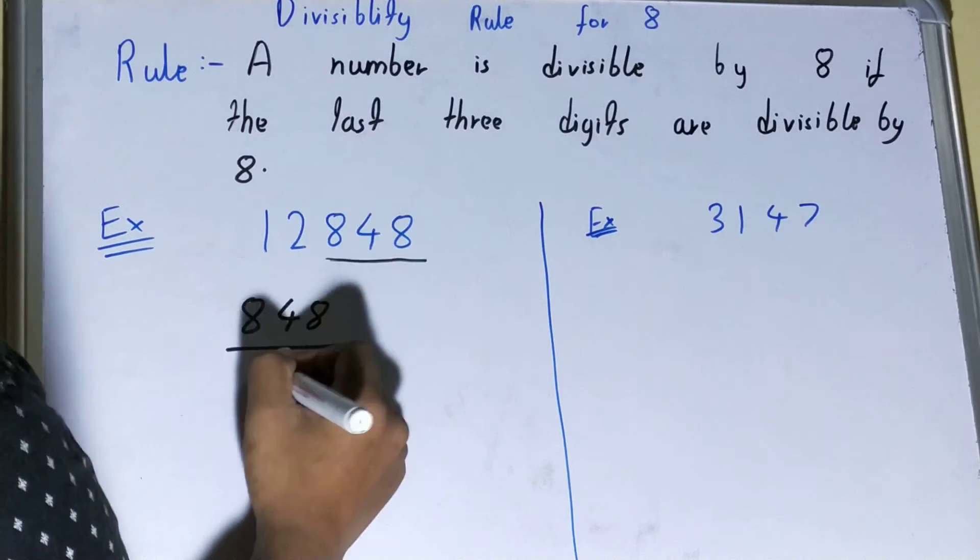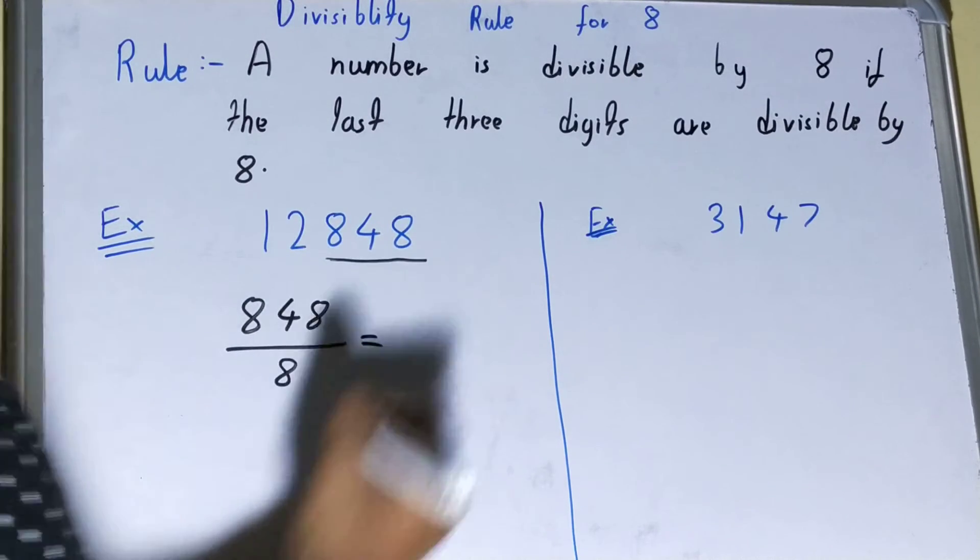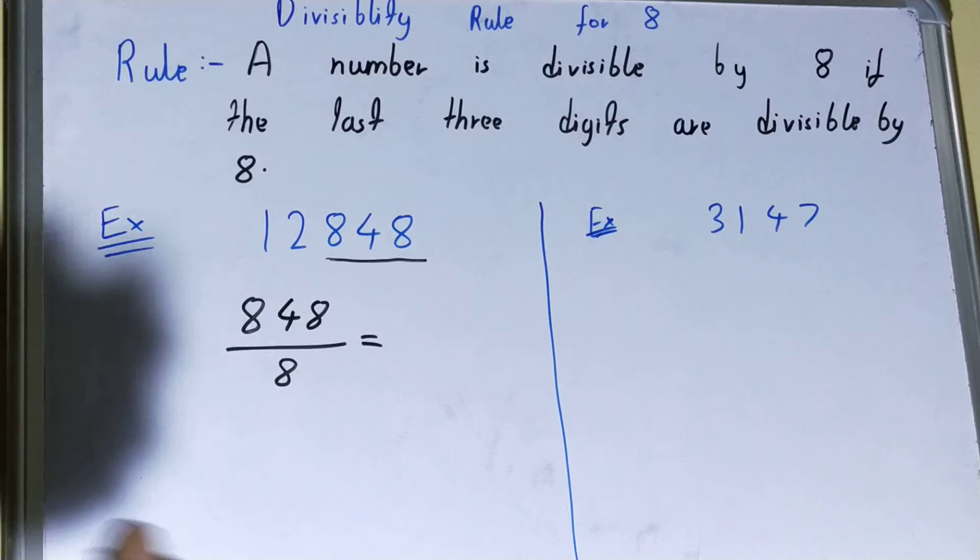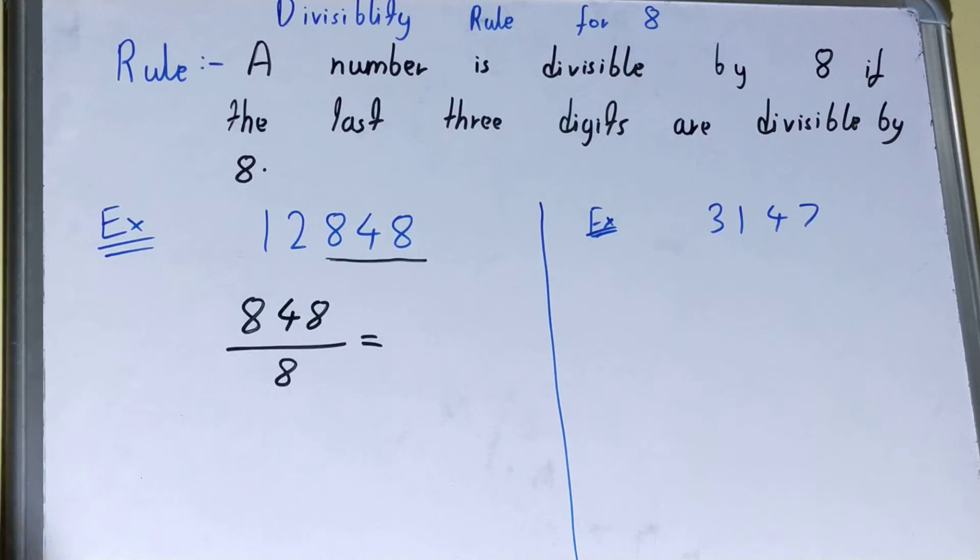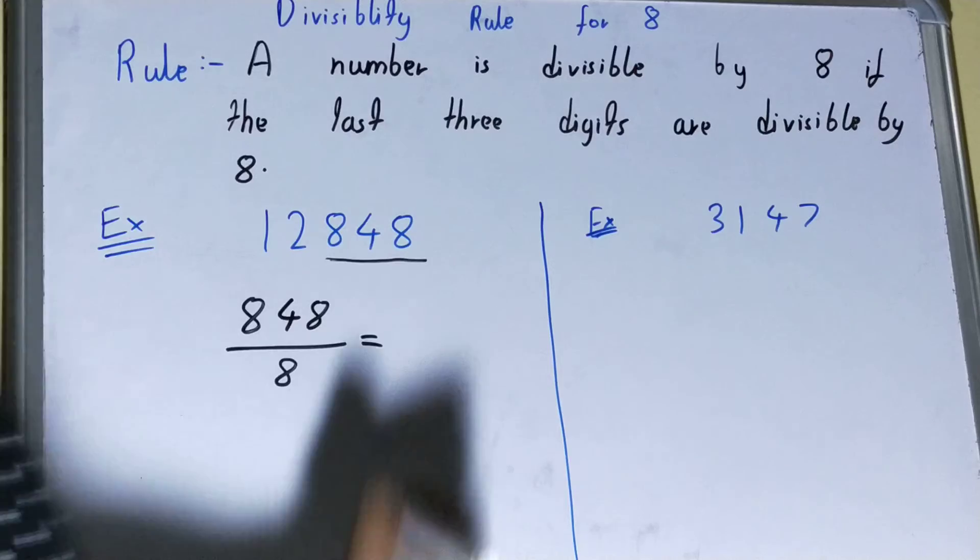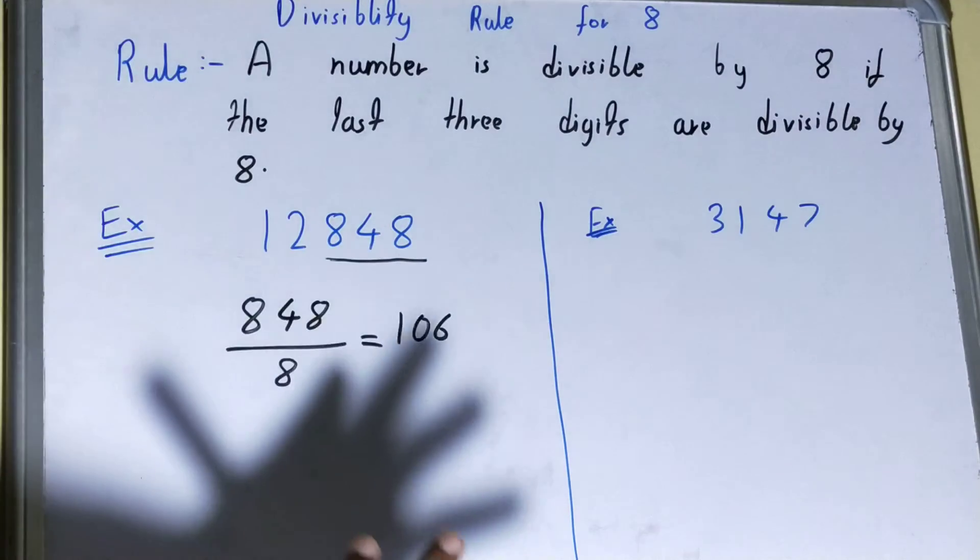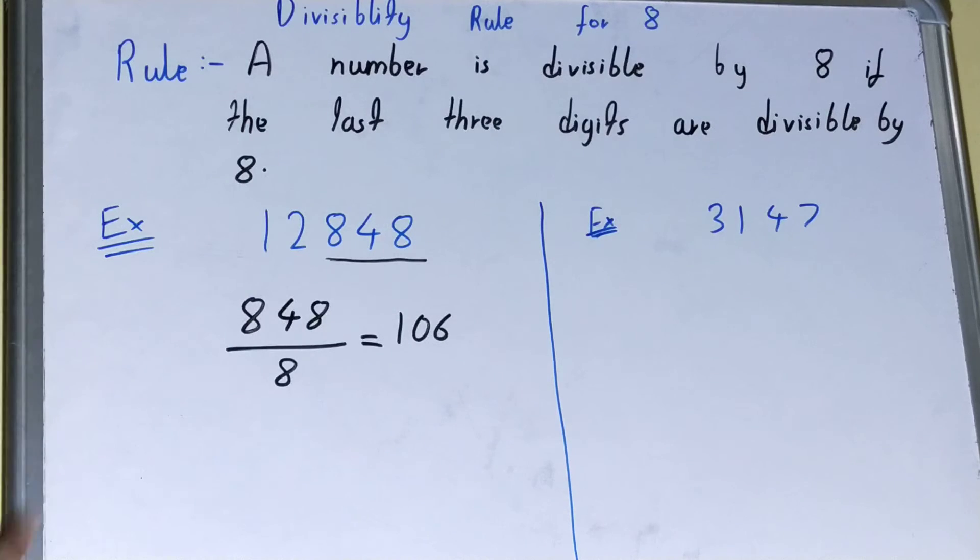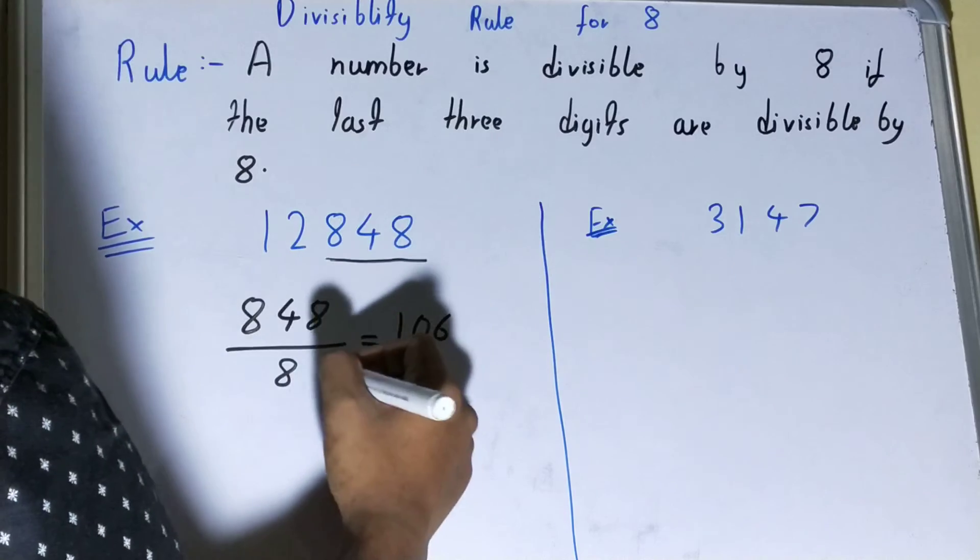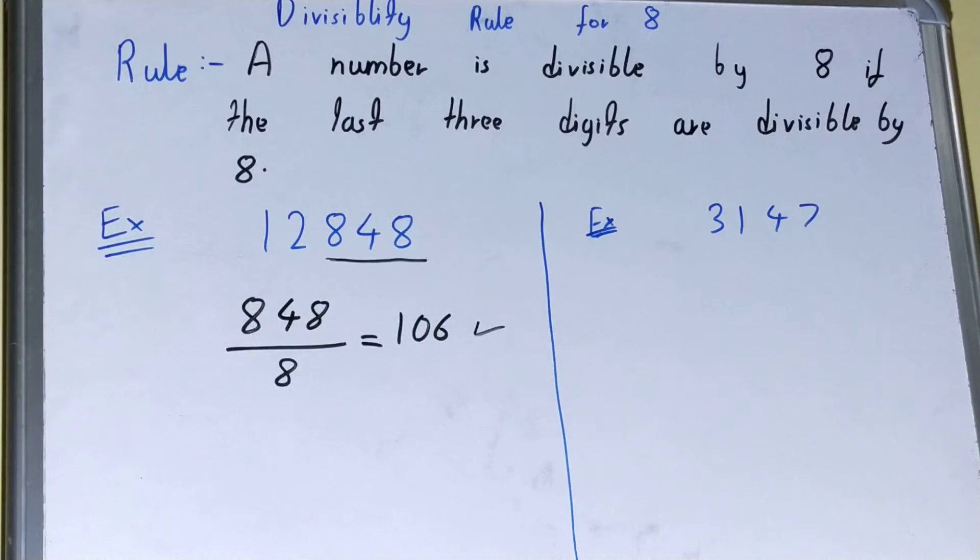We'll divide it by 8 and see whether we get a whole number or not, or whether the remainder is zero. We get an answer of 106 with no decimal, or we can say the remainder we get is zero. So it is divisible by 8.